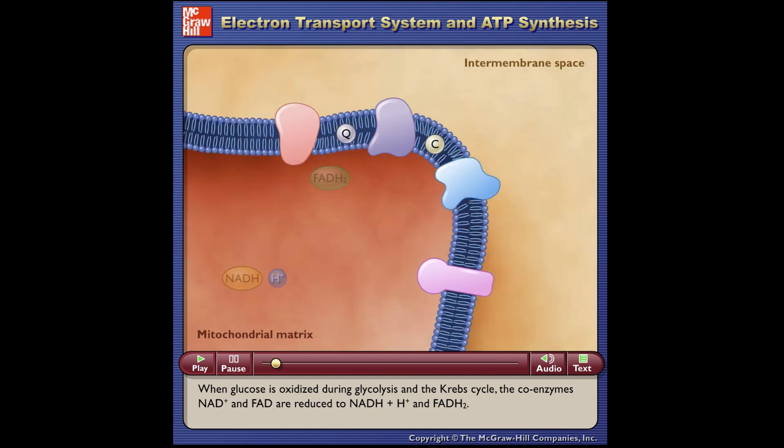When glucose is oxidized during glycolysis and the Krebs cycle, the coenzymes NAD+ and FAD are reduced to NADH + H+ and FADH2.